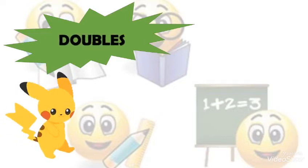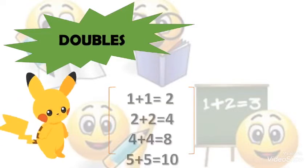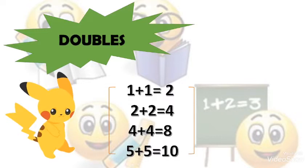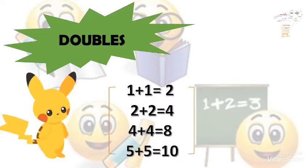For example, double of number 1 is 1 plus 1, double of number 2 is 2 plus 2, double of number 3 is 3 plus 3, double of number 4 is 4 plus 4 and so on.